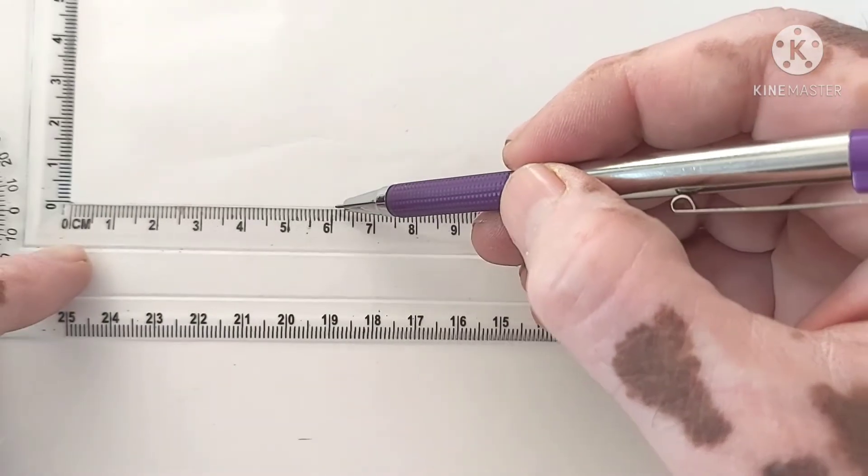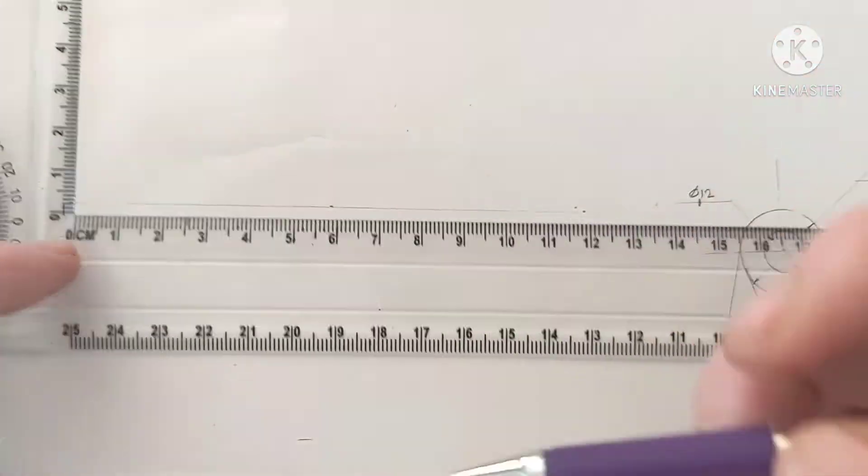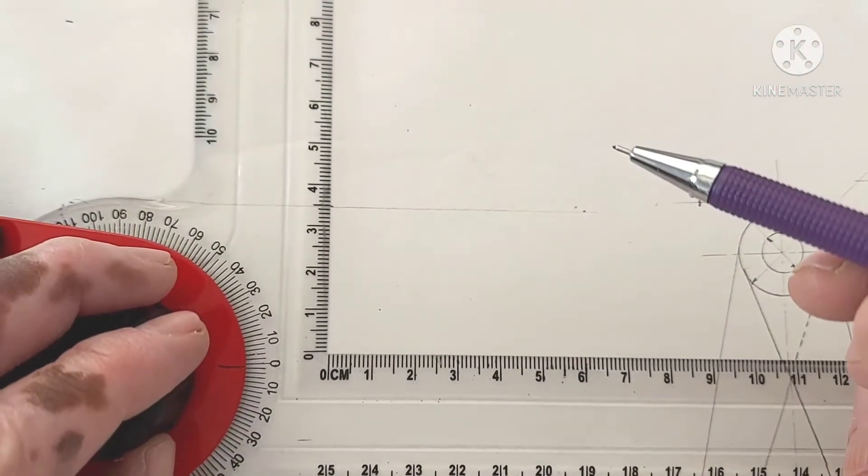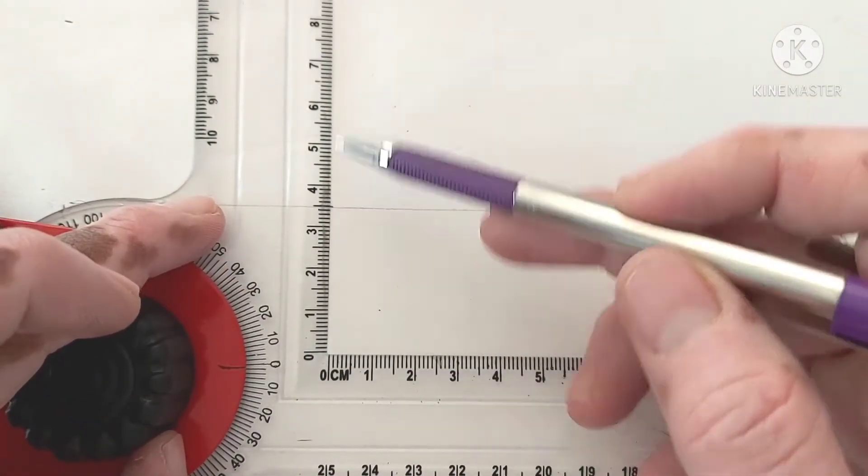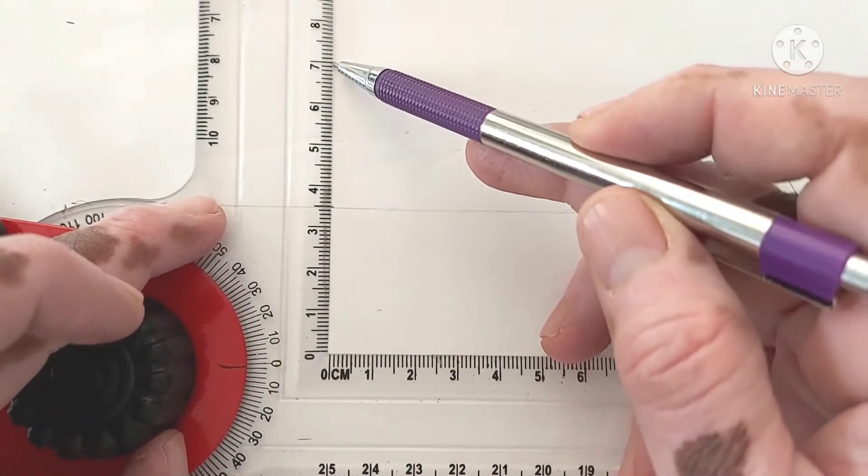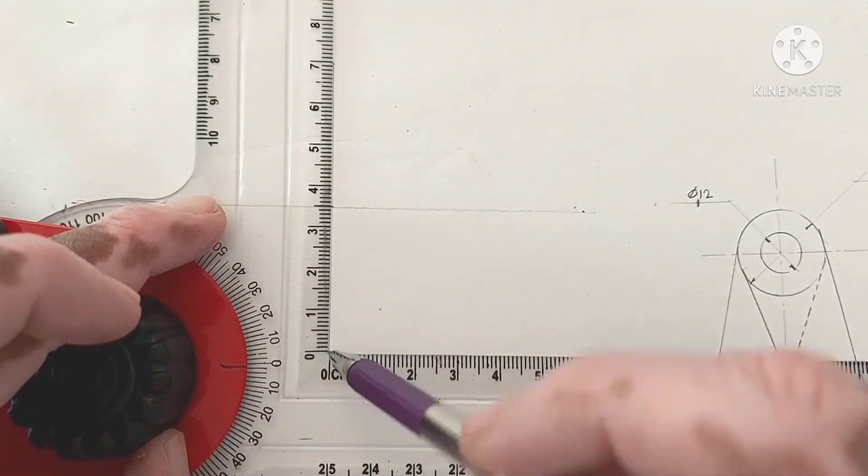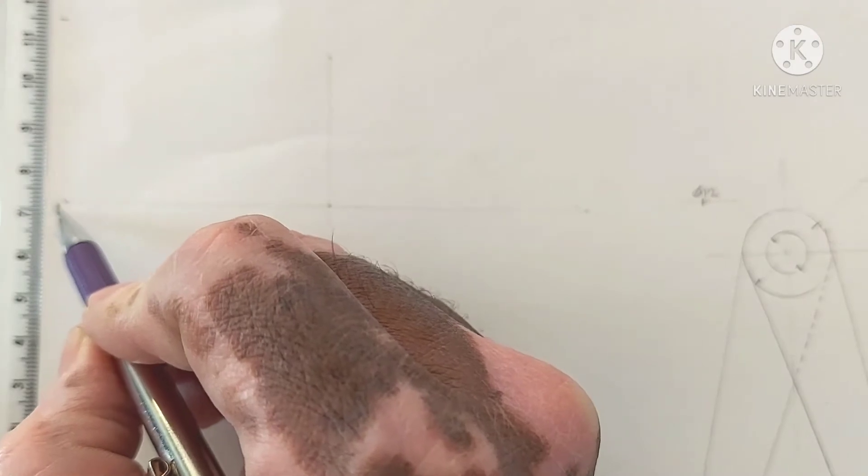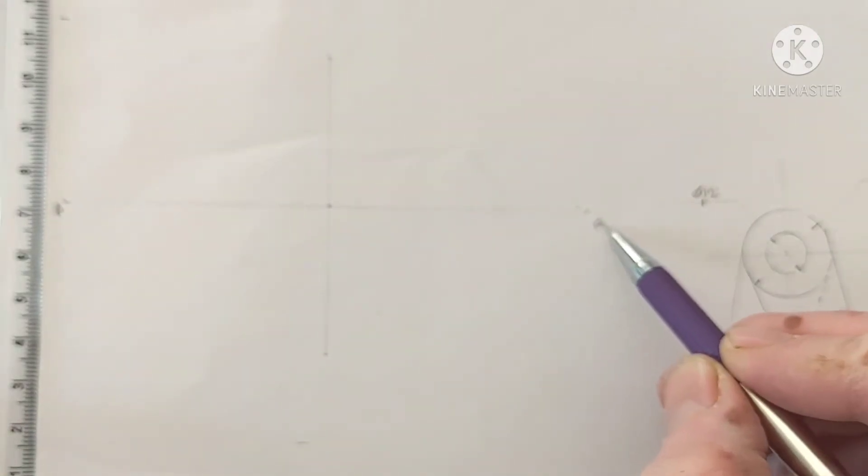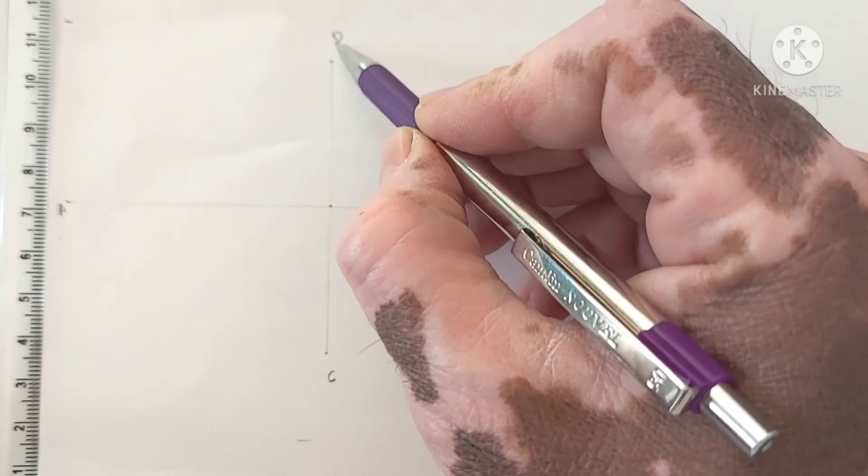And length of minor axis is 70 mm means 35 mm below, 35 mm above. 35 below, 35 above. I am giving the number to major axis that is a, b and minor axis c, d.